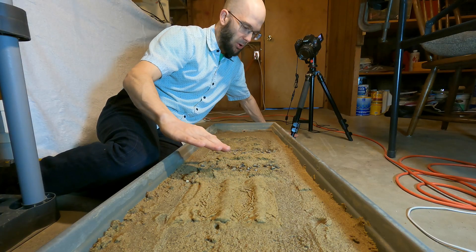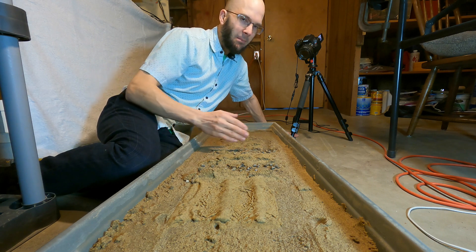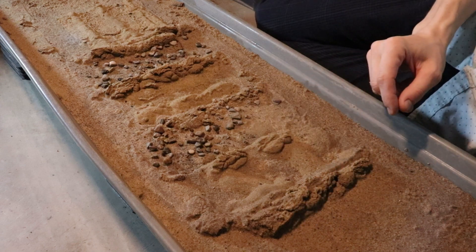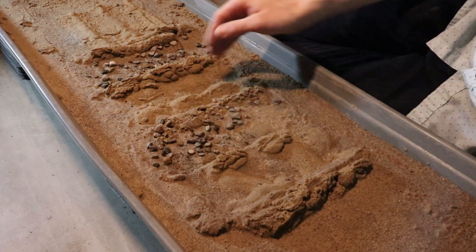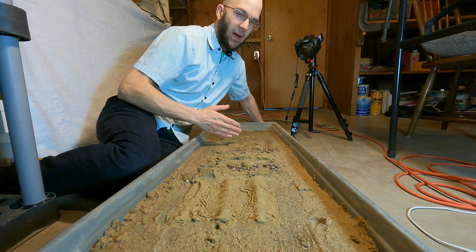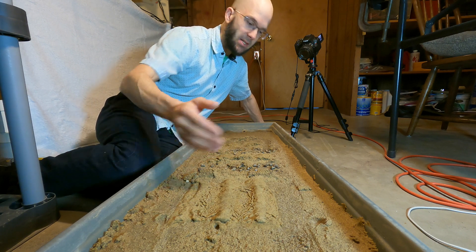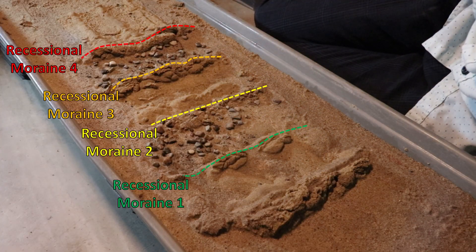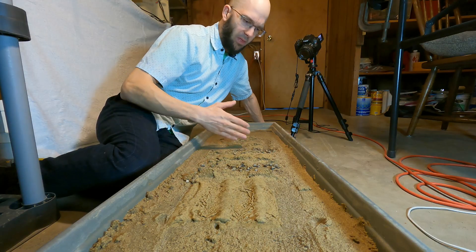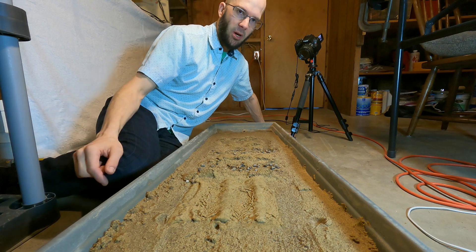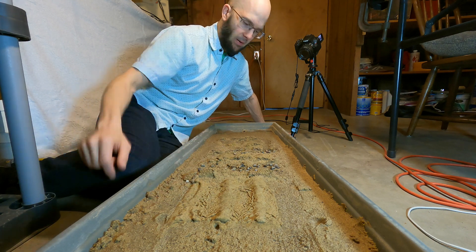Recessional moraines are sometimes a little bit more delicate than the terminal moraine. The terminal moraine is a big, tough, robust-looking structure, while the recessional moraines are a little bit more delicate. There's no rule that says a glacier has to produce any recessional moraines — it can produce several, as it has here: one, two, three, four recessional moraines — or it could produce none. It just depends on what the long-term and short-term cycles are as that glacier retreats and melts away.